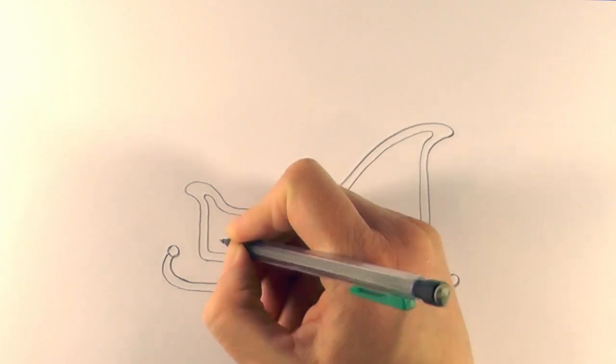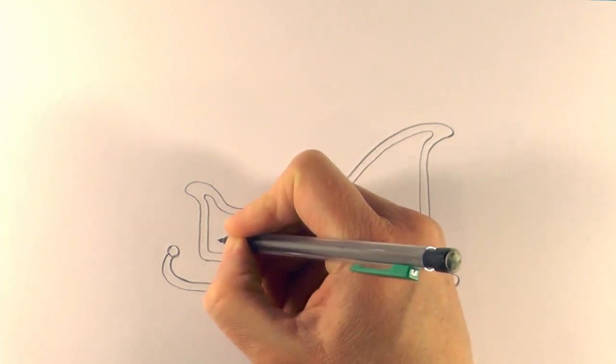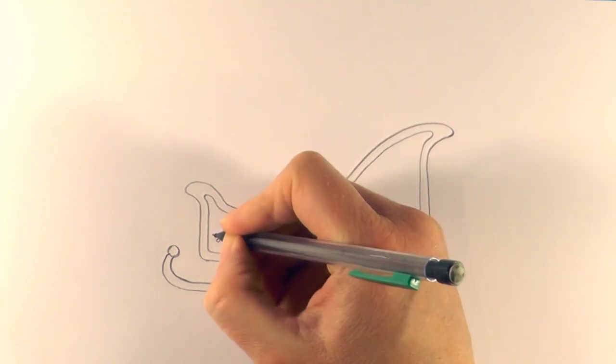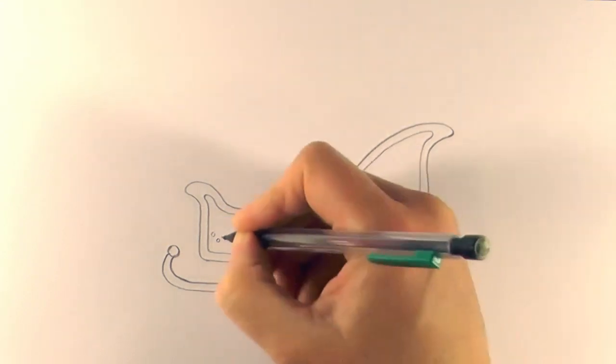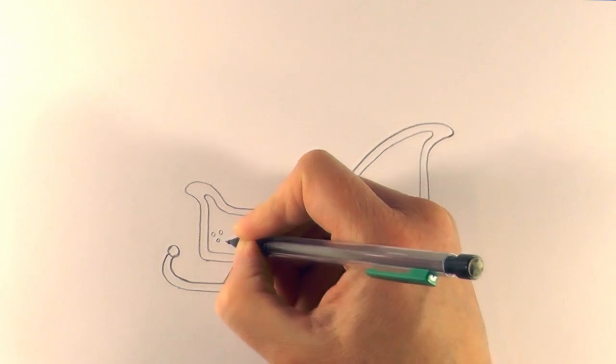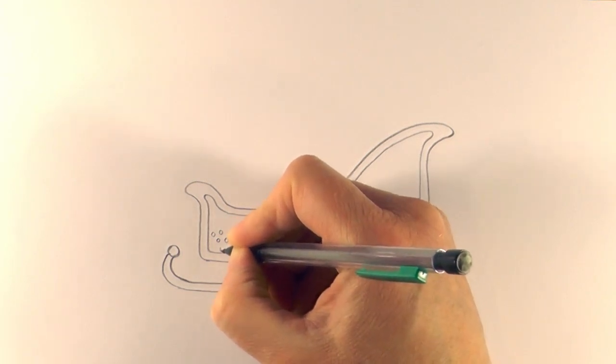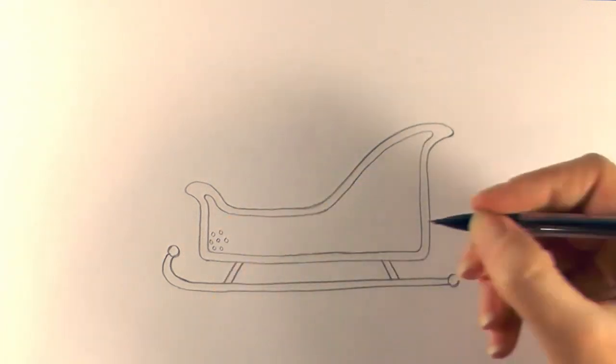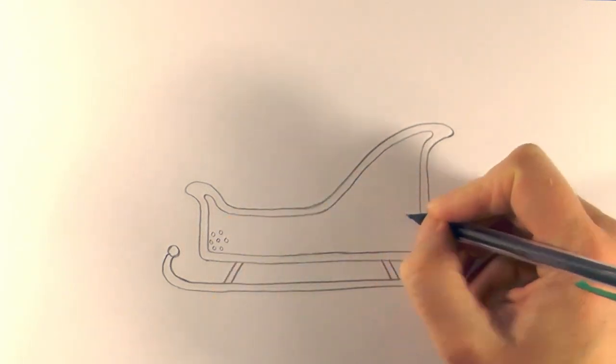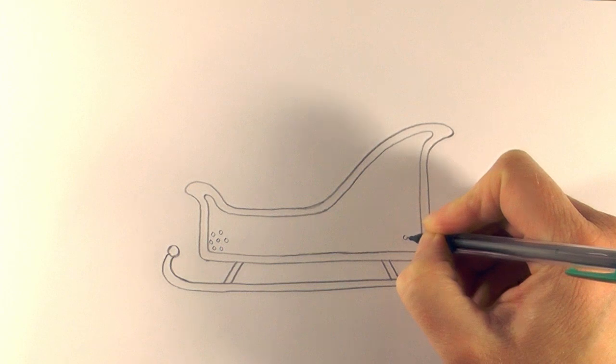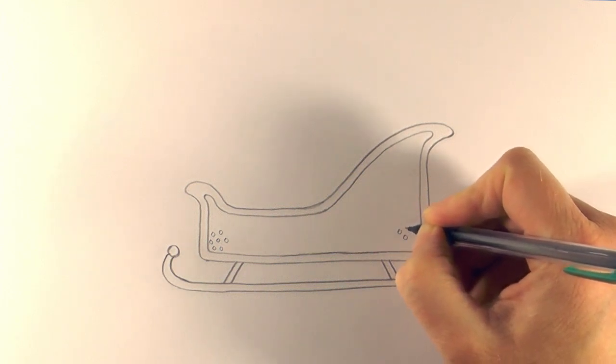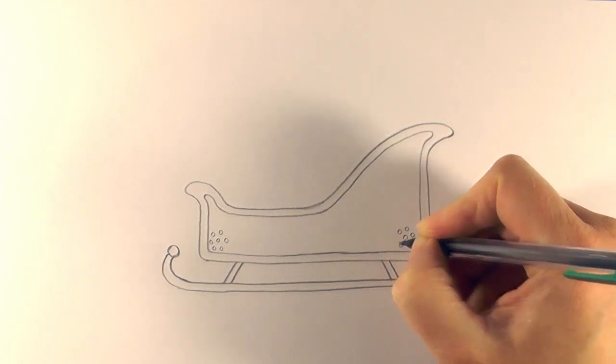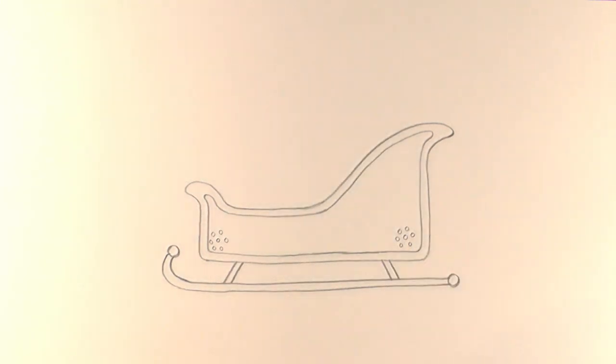Then to add just a little bit more detail, just put some circles on here, just a little bit of a pattern. So I'm just going to do one circle in the middle and then just some circles around the outside like that. And again here, it just adds a little bit more to the sleigh. Like that.